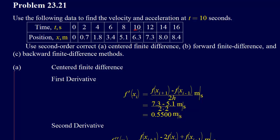So t equals 10 seconds, that's right here, and we're supposed to use second order correct centered finite difference, forward finite difference, and backward finite difference methods.